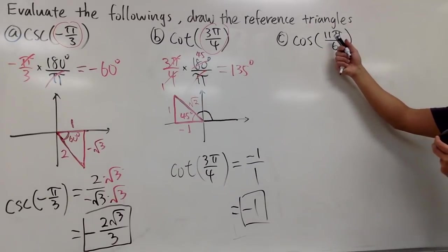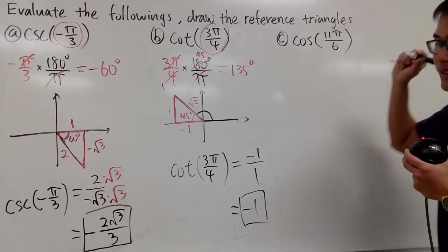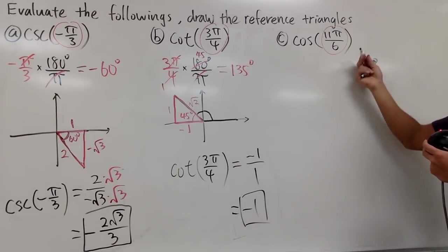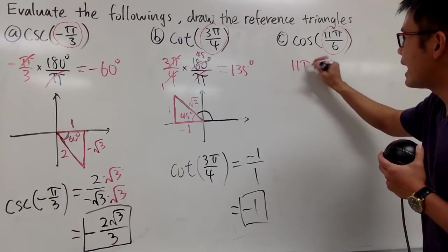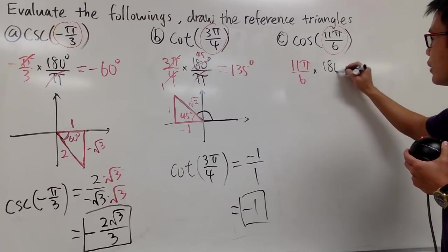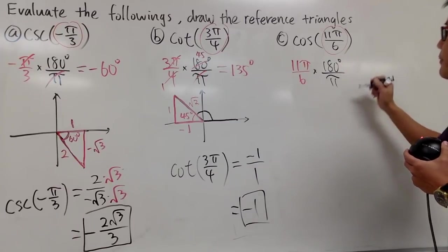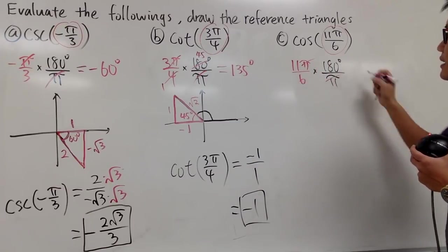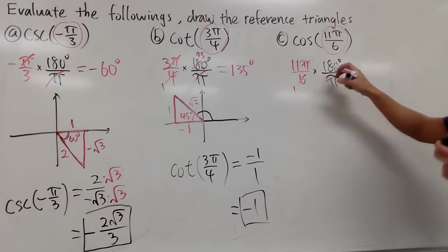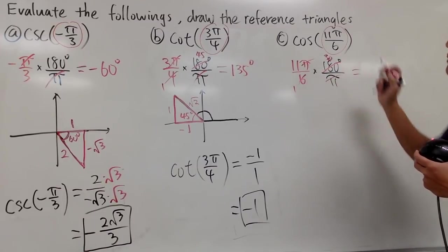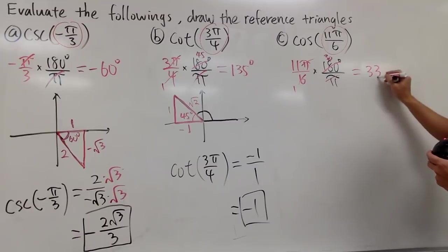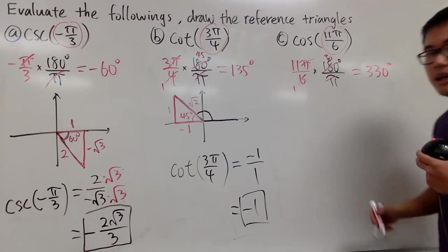Lastly, we have cosine of 11 pi over 6. Same strategy. Let's change 11 pi over 6 into degrees by multiplying this by 180 degrees over pi. Pi and pi cancel, and we can reduce. 6 goes into 180 thirty times. 11 times 30 is 330, and that's in degrees.